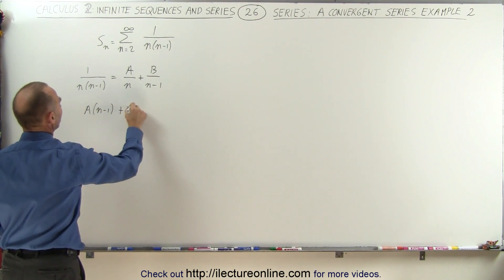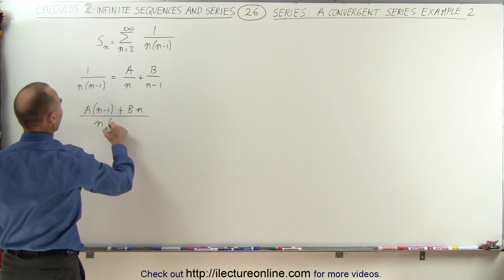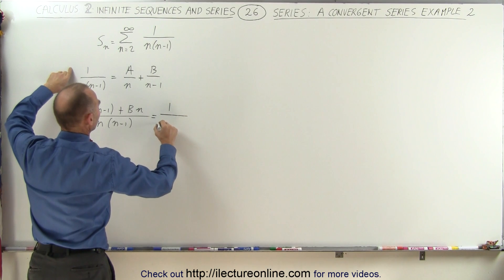This should equal the original fraction, which is 1 over n times n minus 1.